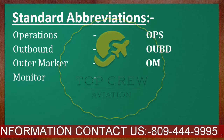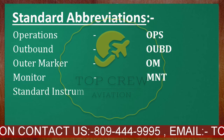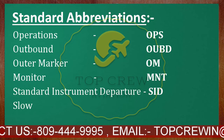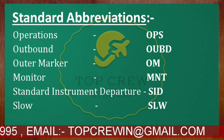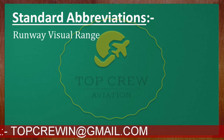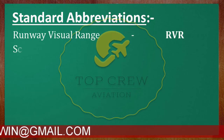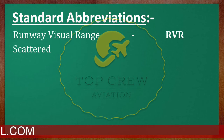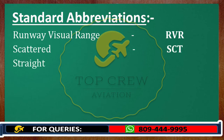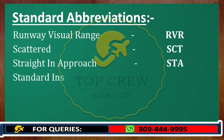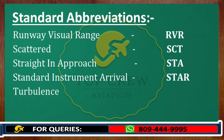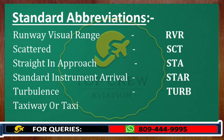Standard Instrument Departure — SID. Slow — SLW. Runway Visual Range — RVR. Scattered — SCT. Straight-in Approach — STA. Standard Instrument Arrival — STAR. Turbulence — TURB. Taxiway or Taxi — TWY. Visibility — VIS.